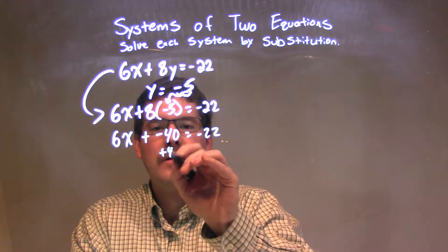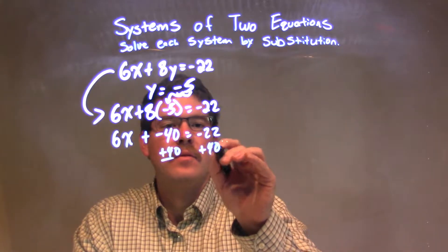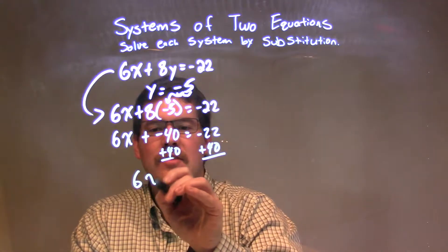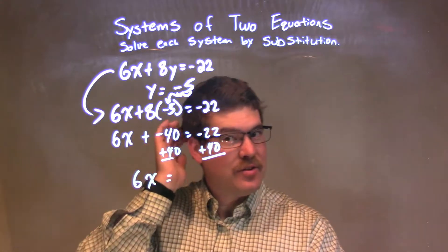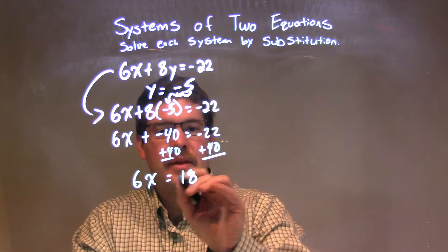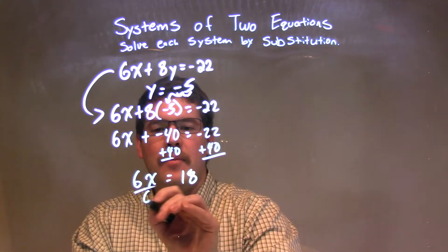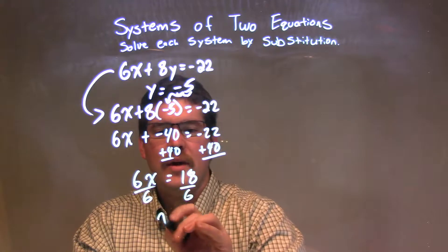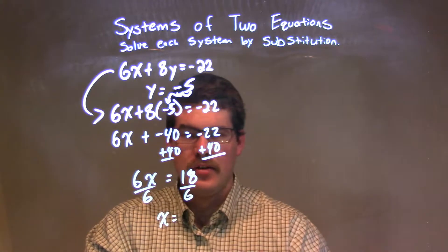I'm going to add 40 to both sides here, giving me 6x by itself, and negative 22 plus 40 is 18, a positive 18. I'm going to divide by 6 on both sides, giving me x by itself, and 18 divided by 6 is 3.